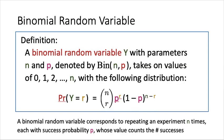Next, we will define another very useful random variable called the binomial random variable. A binomial random variable, let's call it Y as well, will have two parameters, n and p. We can denote it as Bin(n, p). So there are two parameters, n and p.